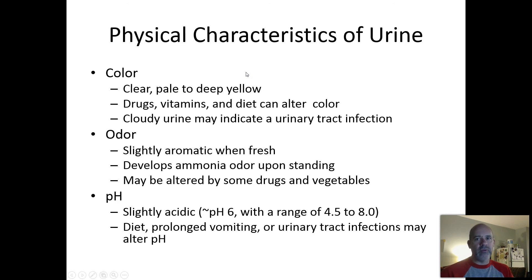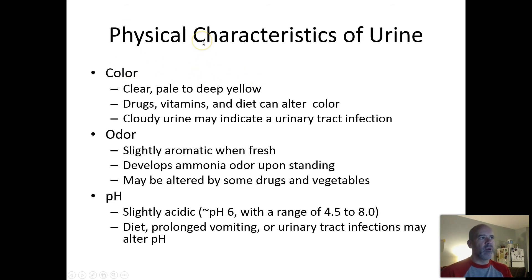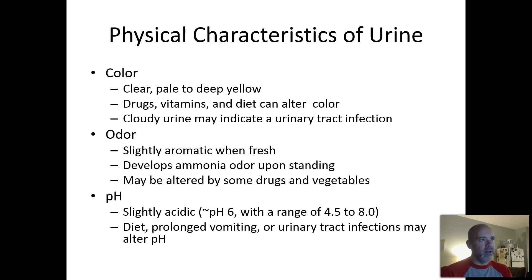Physical characteristics of urine: after urine has formed from its journey through the nephrons and collecting ducts, it lands in the renal pelvis. From the renal pelvis it flows into the ureters and heads off to the bladder. Color is clear pale to deep yellow — drugs, vitamins, and diet can all influence color and odor.